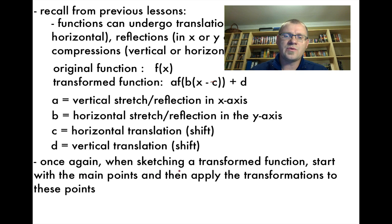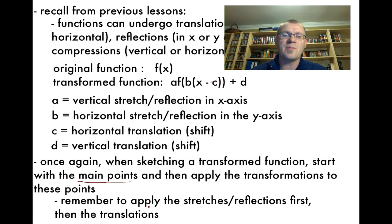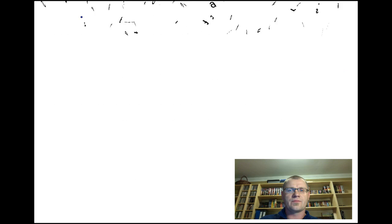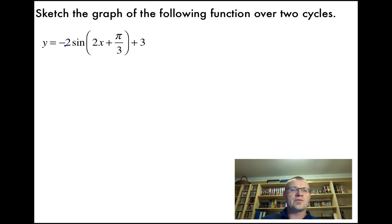When sketching a transformed function, we start with the main points and apply the transformations to them. Remember that we apply the stretches and reflections first, then the translations. Here's our example: sketch the graph of y = −2 sin(2x + π/3) + 3 over two cycles.